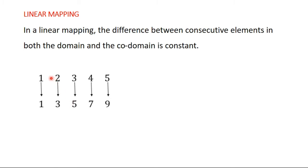They don't necessarily have to be the same. The difference between consecutive elements in the domain can be different from the difference between consecutive elements in the codomain. For the domain, the consecutive elements differ by one; for the codomain, the consecutive elements differ by two. And it's constant for both the domain and the codomain. When you have this, we say that you have a linear mapping.